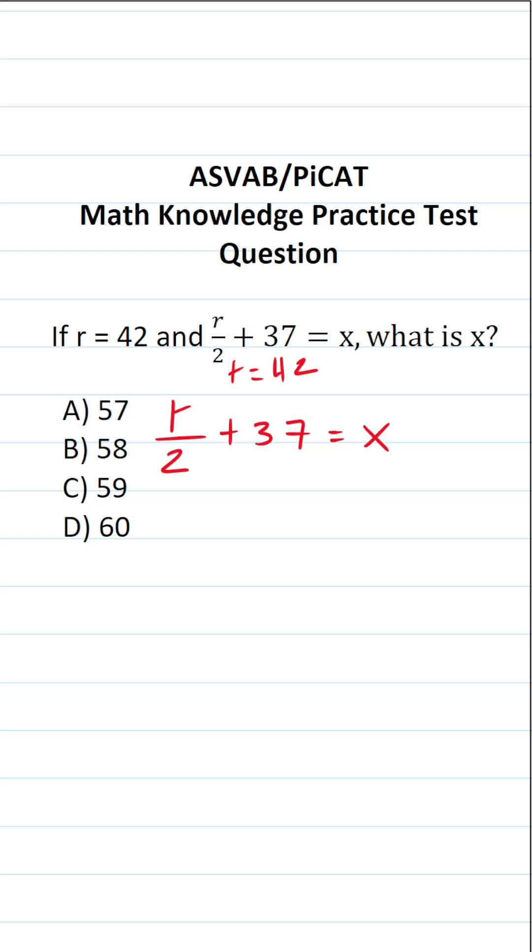In this case, we want to solve this equation for x. We know r equals 42, so the first thing I'm going to do is plug in 42 for r. This becomes 42 divided by 2 plus 37 equals x.